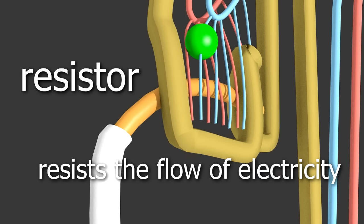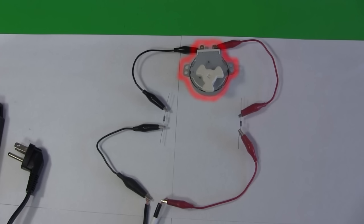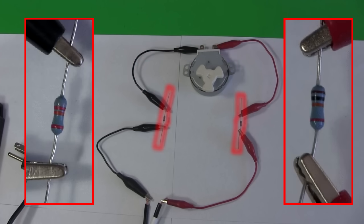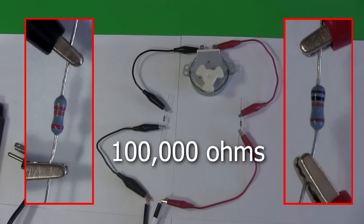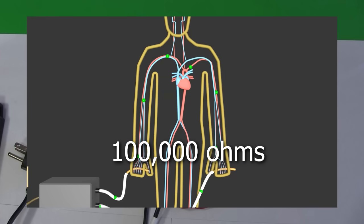As the name implies, resistors resist the flow of electricity. Let's look at an analogous electrical circuit. This motor represents the heart. These wires are the blood vessel, and these resistors are the dead skin that provides most of the resistance to the flow of current. The values of these resistors add up to 100,000 ohms. That's the same resistance that a body with dry skin has.